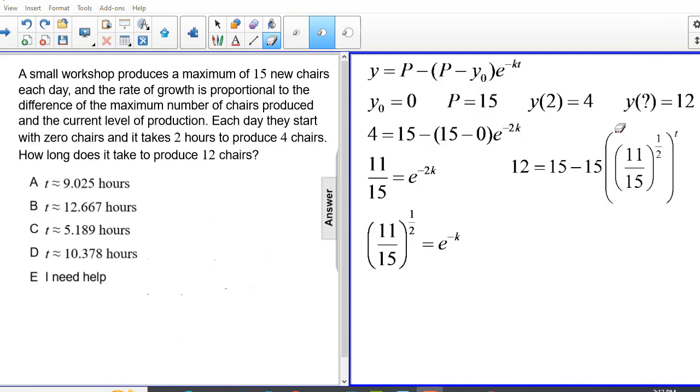So I replace e to the negative k with my new expression, 11 over 15 to the negative k. And this time y is now 12. So notice the change I made, y is equal to 12. And we are looking for the t when we produce 12 chairs. So what time t will produce 12 chairs?